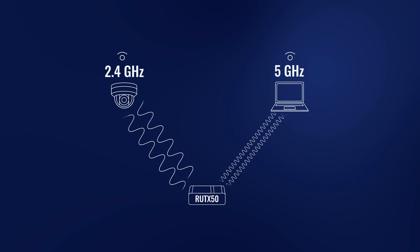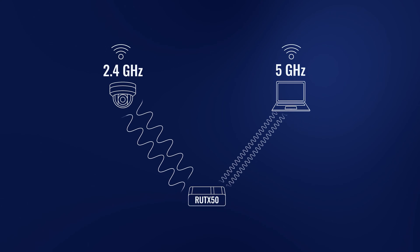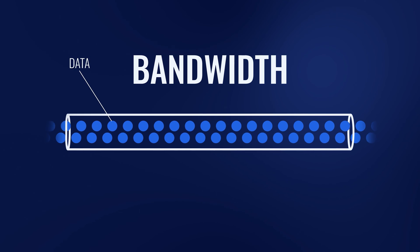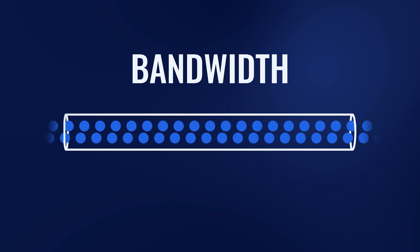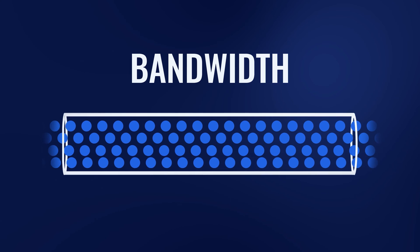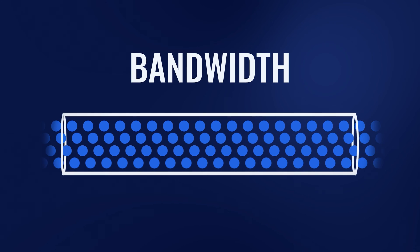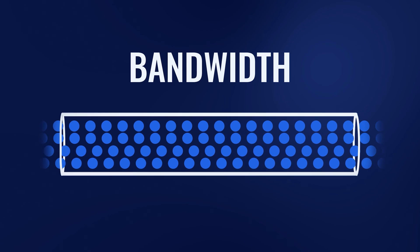Carrier aggregation is closely intertwined with terms like frequency bands and bandwidth, as they are related to each other, so they too need a quick explanation. In networking, frequency bands refer to specific ranges of electromagnetic frequencies used to transmit and receive communication signals. Bandwidth is the measure of how much data can be transmitted in a given time, which determines the speed of your network. In general, the greater the bandwidth, the more data can be transferred in a shorter period, resulting in faster speeds.